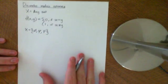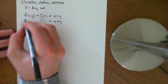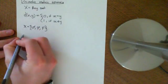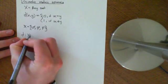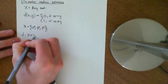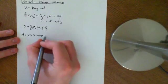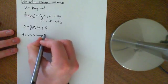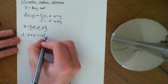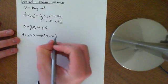So we have three symbols here. The distance function, remember, is strictly a function which is going to map the Cartesian product of X with itself, and it's going to map it onto the non-negative real numbers, so zero to infinity.